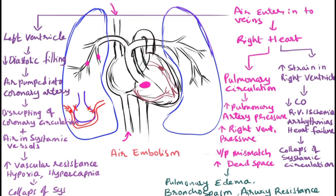These are the consequences of the pathophysiology of air embolism. In summary, once air enters the circulatory system, it may get trapped in the right ventricle or right heart, may pass through the pulmonary circulation, and at times may enter the left ventricle.